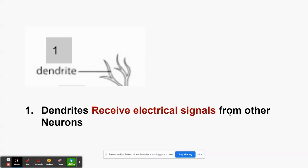The first function to cover is the dendrites. Dendrites receive electrical signals from other neurons — they're the receiver — and they pass the message on to the cell body. Pause the video and write this down: receives electrical signals from other neurons. There can be hundreds of dendrites on a single neuron.